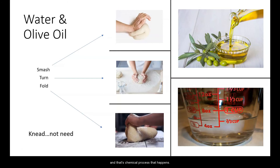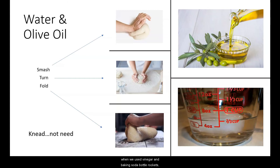Carbon dioxide is the same stuff that's in soda pops that we use for Mentos. When we use vinegar and baking soda for bottle rockets, it converts to carbon dioxide — and carbon dioxide is everywhere.